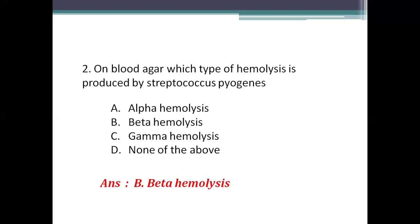Hemolysis means breakdown of RBCs. Streptococcus pyogenes is a beta hemolytic bacteria — it completely lyses the RBCs, producing clear or colorless colonies on blood agar media. Alpha hemolysis means partial hemolysis and produces greenish discoloration. Gamma hemolysis means there is no hemolysis.